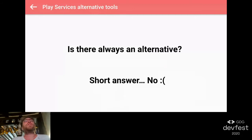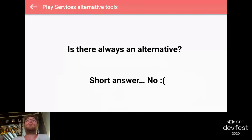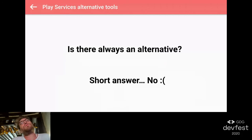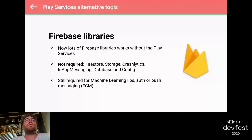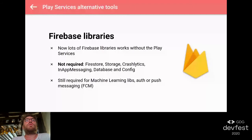For the Firebase libraries, Google is building a lot of tools with Firebase. Now more and more libraries do not require the play services - that's nice for deploying to a lot of devices. For now, Firestore, Storage, Crashlytics, in-app messaging, Realtime Database, and Remote Config do not require the play services. But the machine learning libraries, analytics, auto-process, and the FCM push messaging library are still using the play services. There is still a lot of work to do, but many Firebase libraries are being detached from the play services.